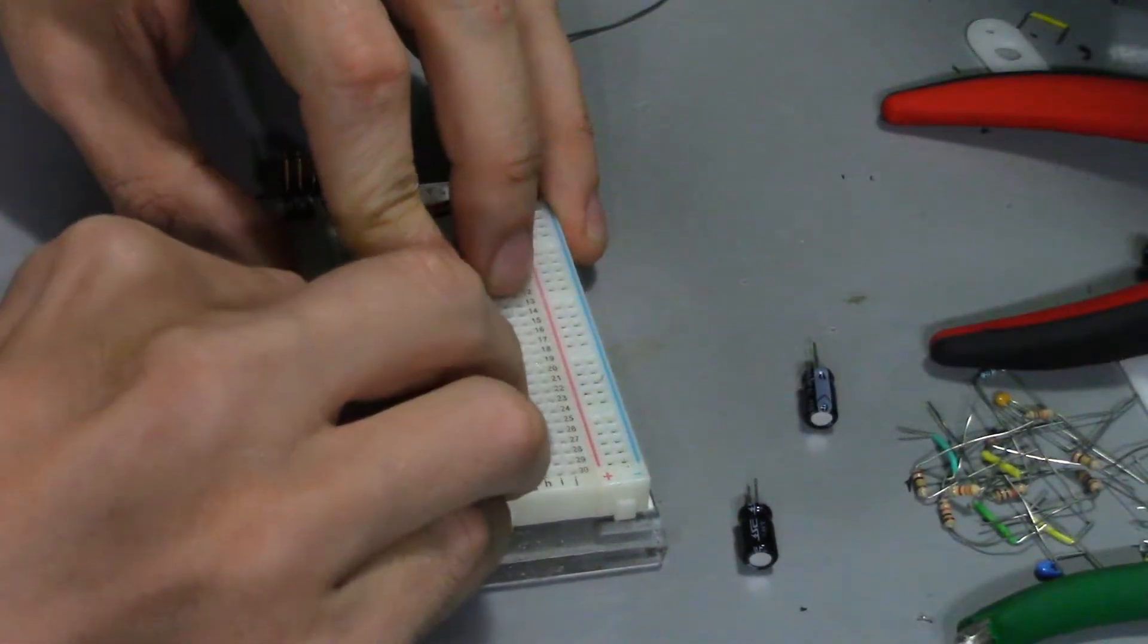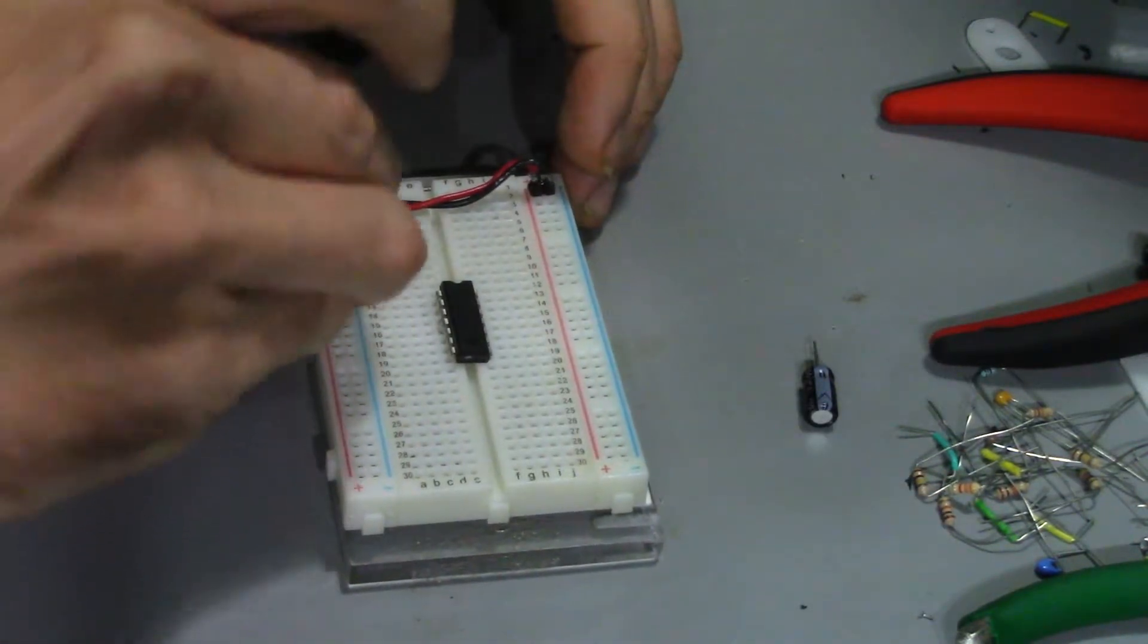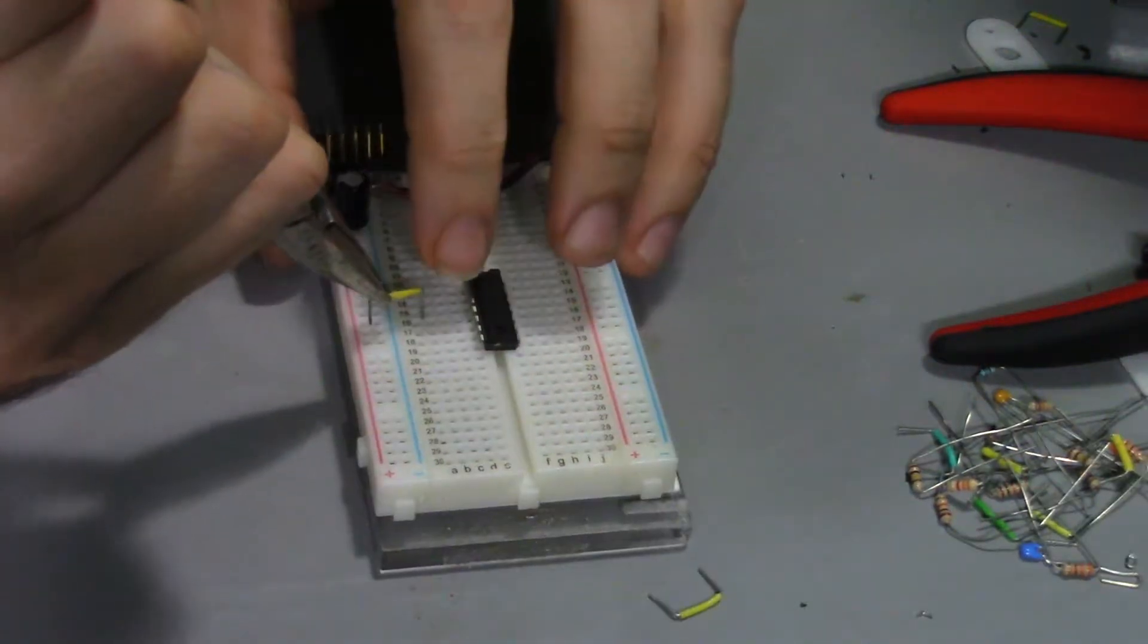Start the breadboard by adding the quad op-amp chip and some power filtering capacitors. Then the power connections to the chip.